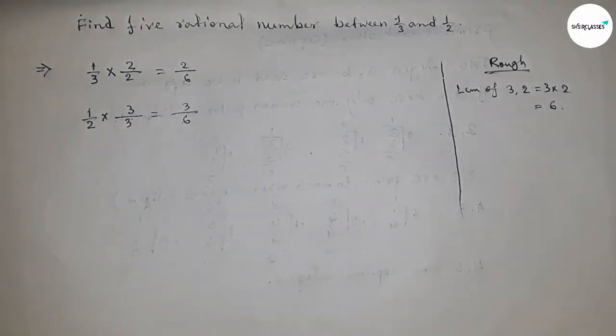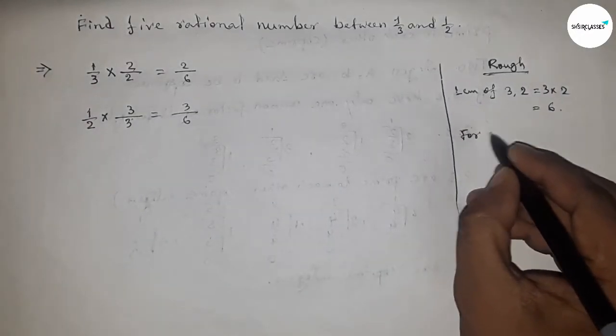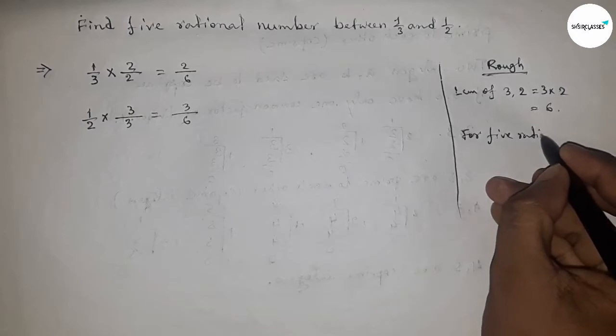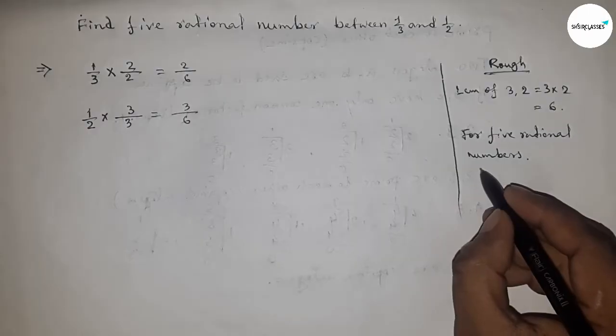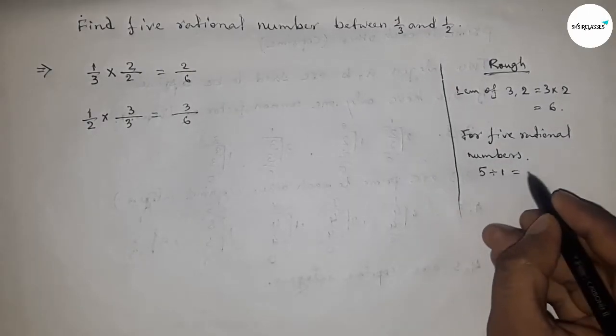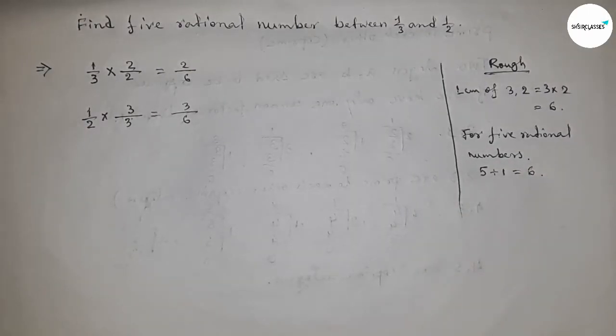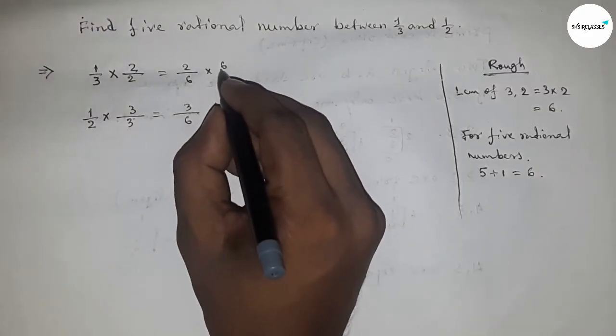Okay, now for five rational numbers, if we have to find five rational numbers, then we have to multiply up and down by five plus one, that is six. So here multiplying six upon six and here six upon six.